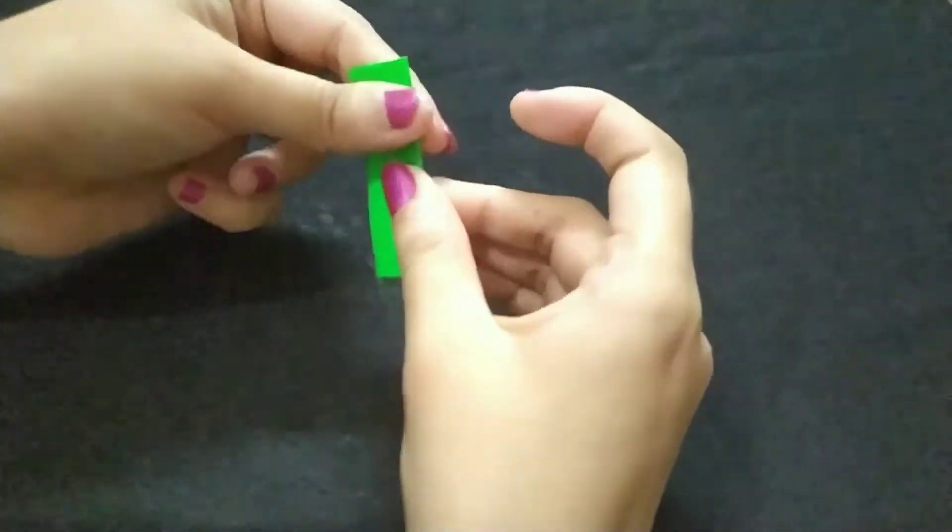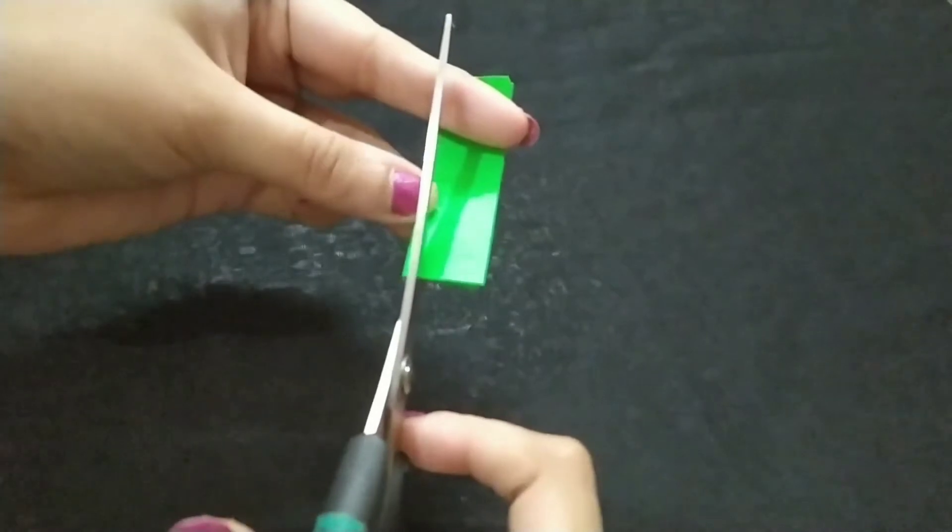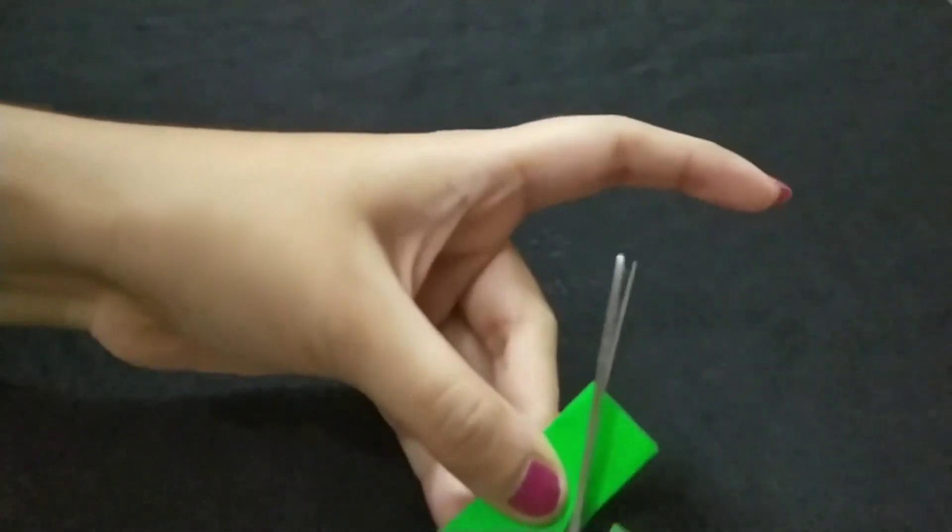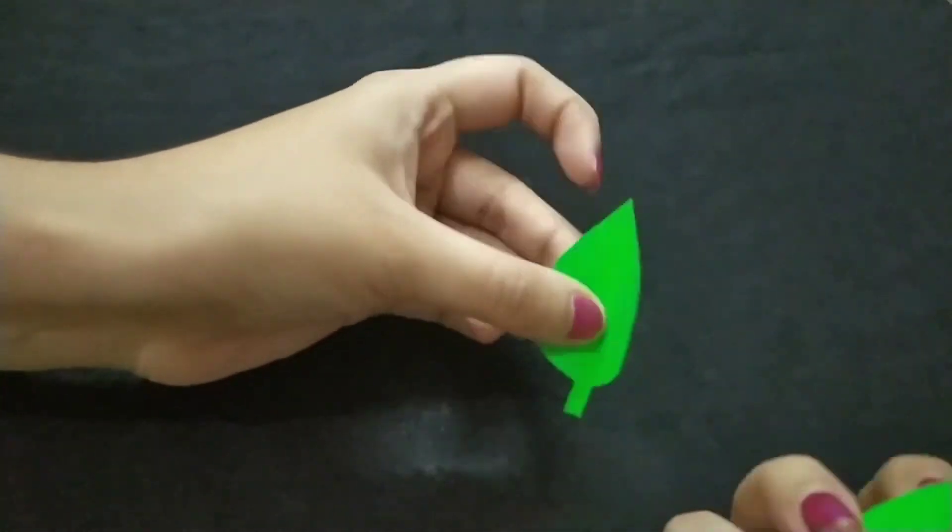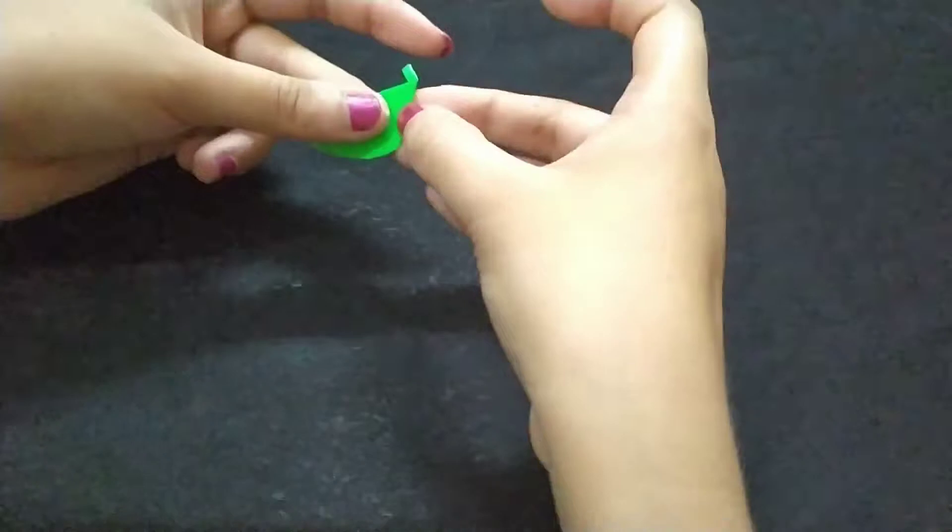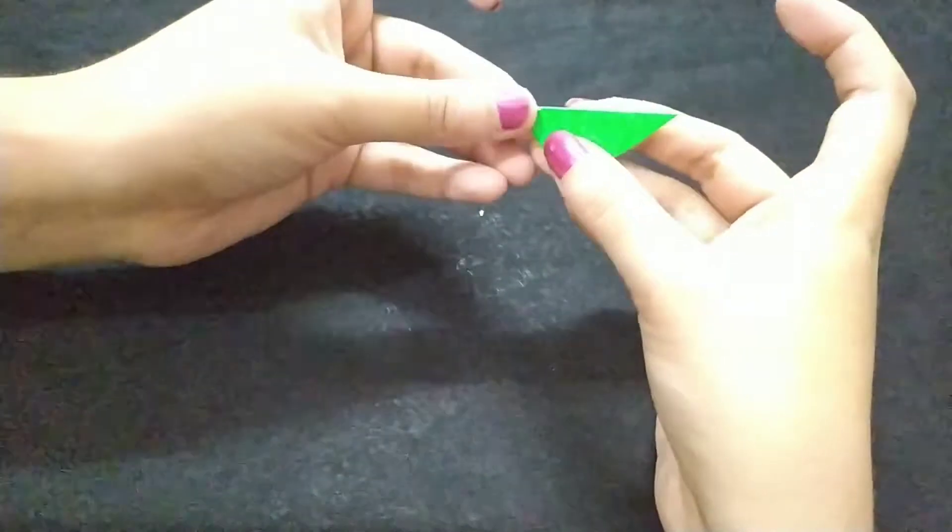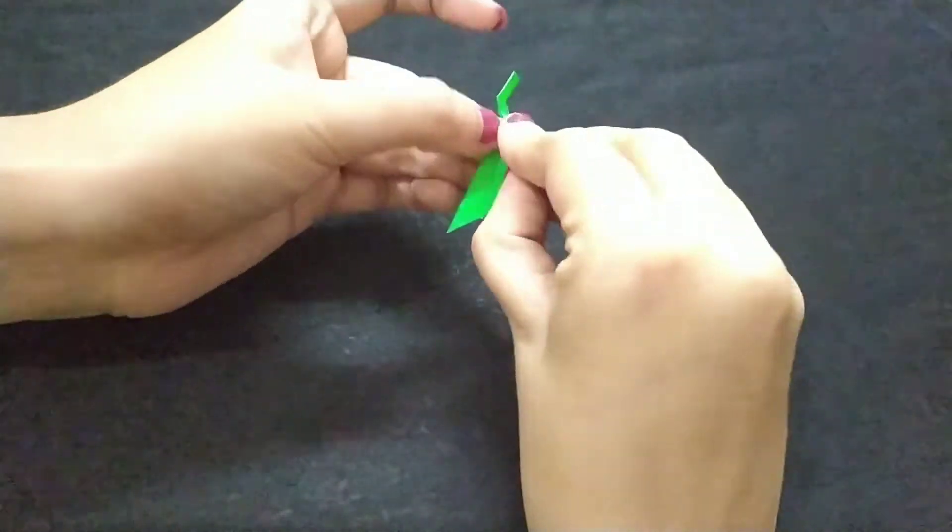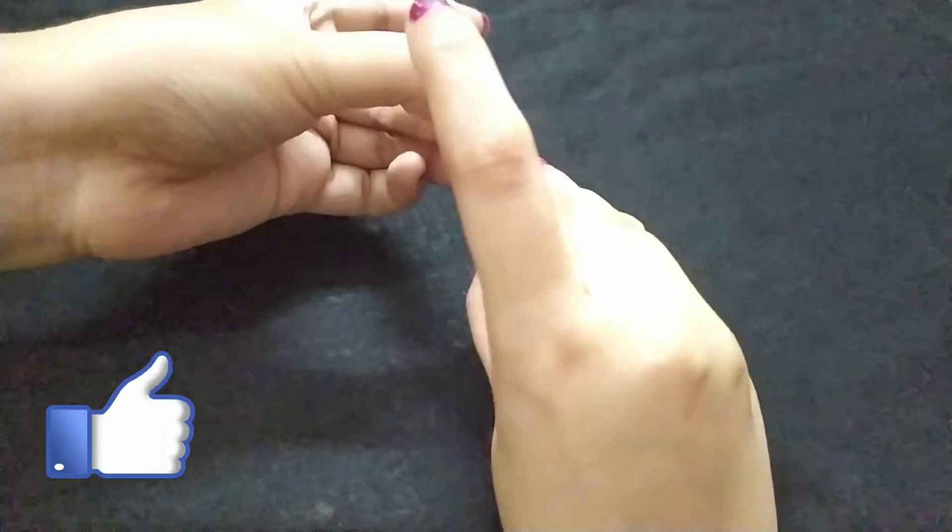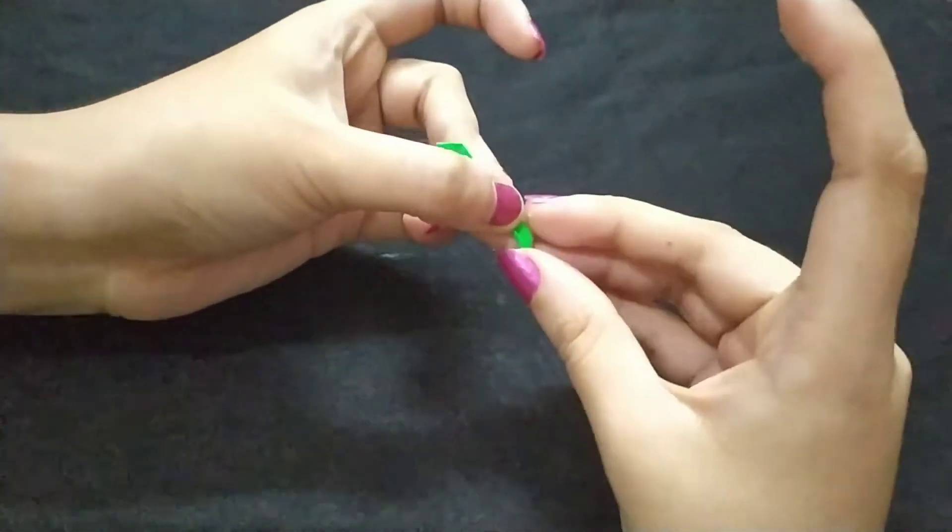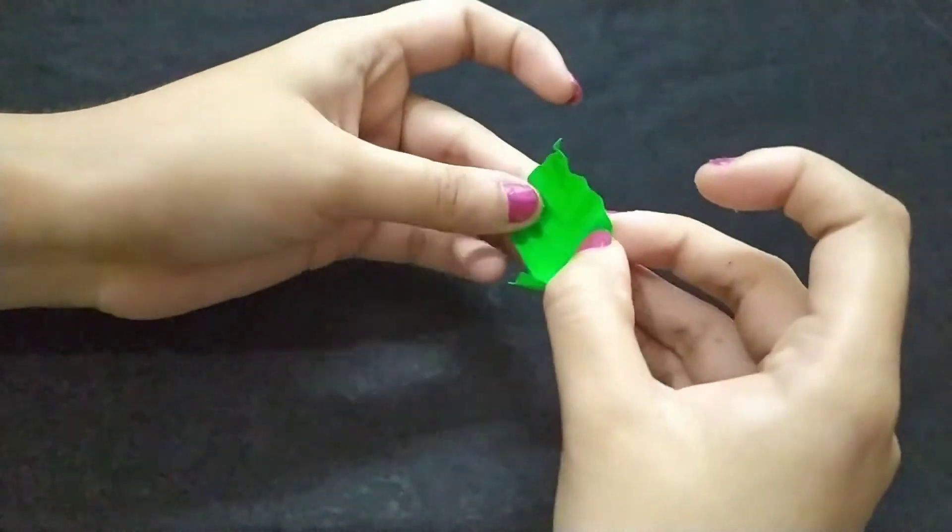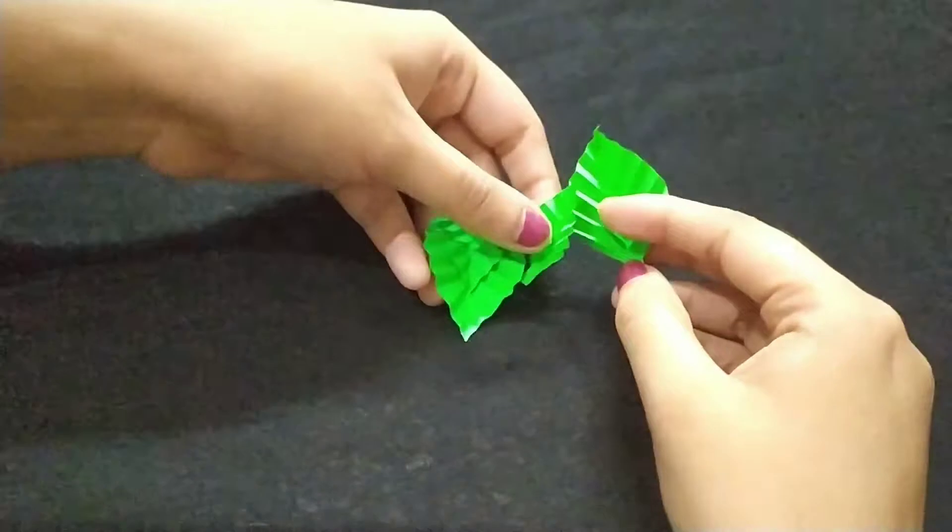Now it's time for making the leaves. Actually, it's my favorite leaf making technique. I am just folding it in this zigzag manner. You can watch my other videos for different types of leaf making. I love this process because of the end results. It looks really beautiful. See, so I have made three more leaves.